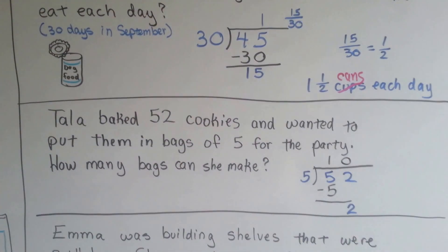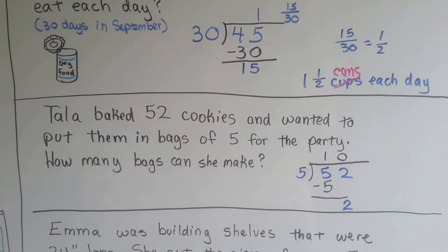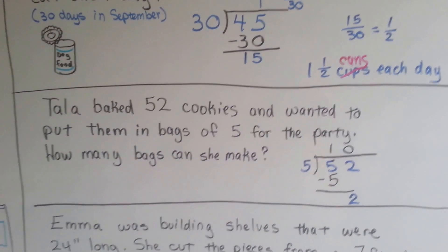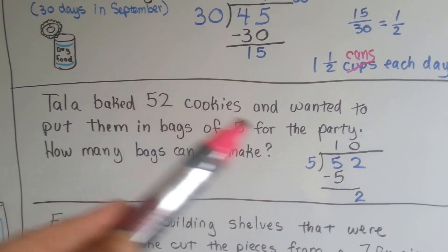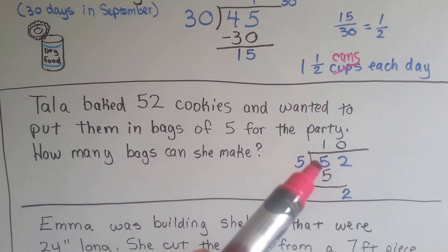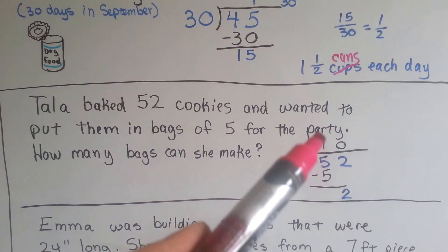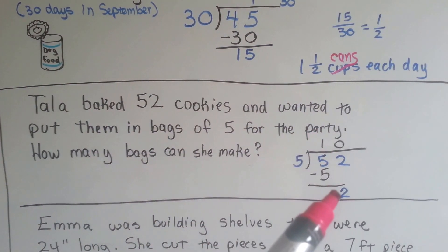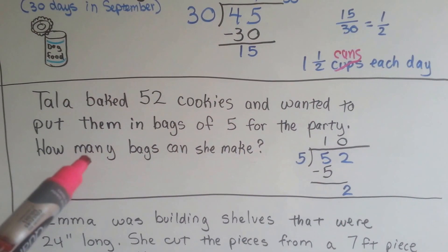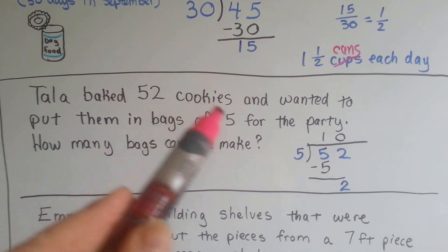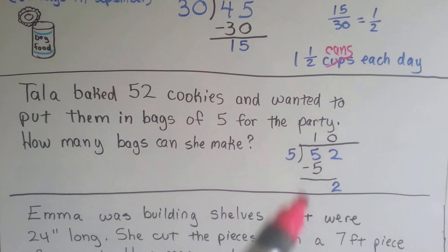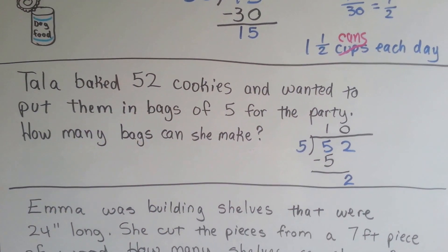How about now? Tala baked 52 cookies and wanted to put them in bags of five for the party. How many bags can she make? She's trying to make bags of five for a party. She's got 52 cookies. Five goes into 52. It goes into five one time. We do the subtraction. We drop the two down. We can't put five into two. So we've got ten full bags of cookies. She needs bags of five. Not bags with two in them. So the answer is she can make ten bags and this two is not important.